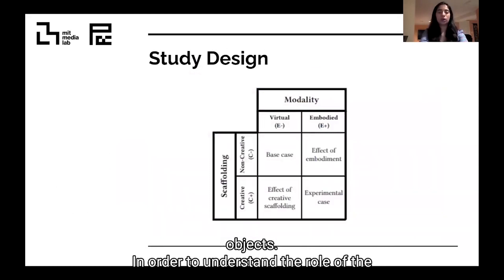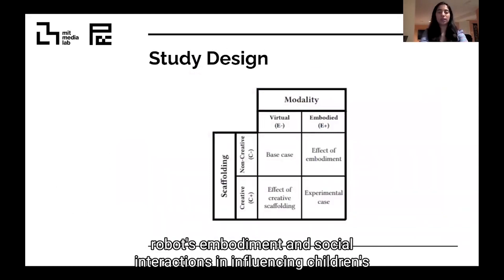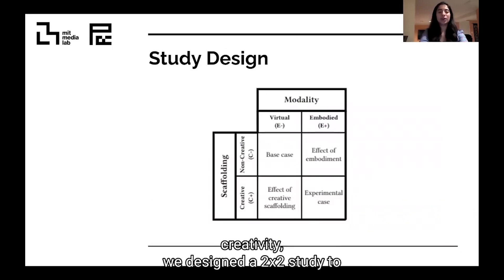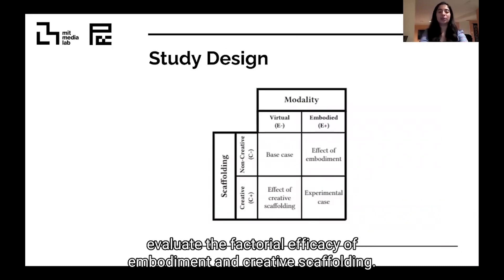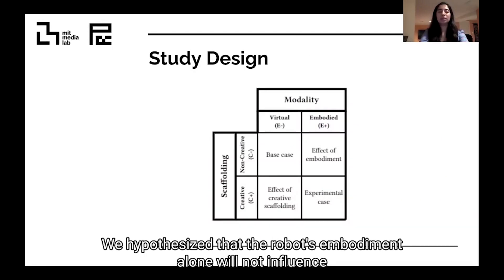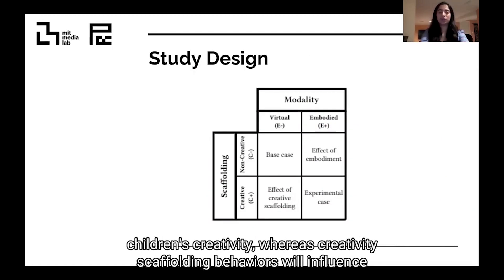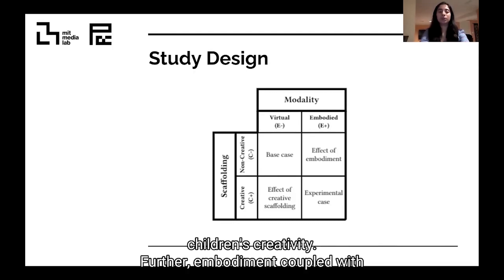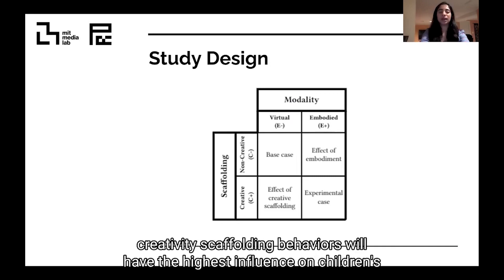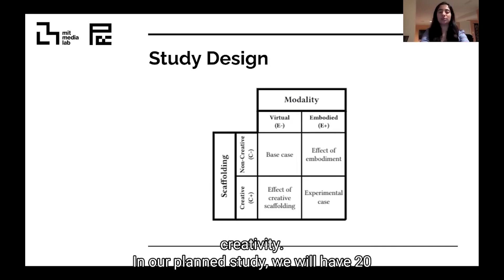In order to understand the role of the robot's embodiment and social interactions in influencing children's creativity, we designed a 2x2 study to evaluate the factorial efficacy of embodiment and creative scaffolding. We hypothesized that the robot's embodiment alone will not influence children's creativity, whereas creativity scaffolding behaviors will influence children's creativity. Further, embodiment coupled with creativity scaffolding behaviors will have the highest influence on children's creativity.